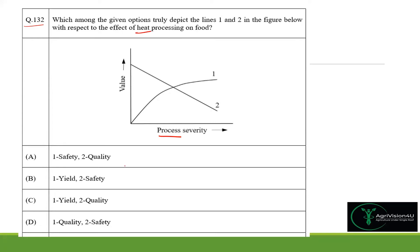As temperature or process severity or time of processing increases, that will definitely lower the quality because heat-labile components would be destroyed if we increase the severity of heat processing. Hence line 2 represents quality, so option A and option C can be the correct answers.